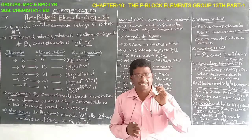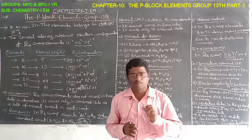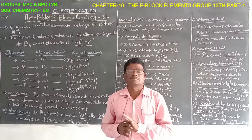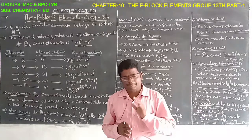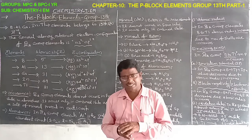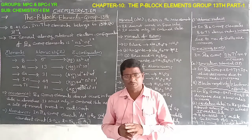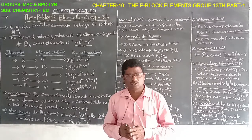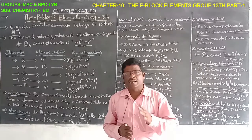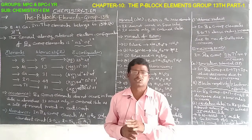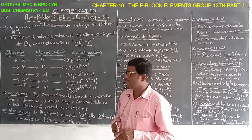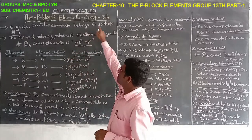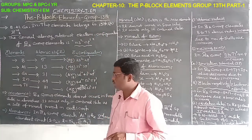The P-Block elements span from Group 3 to Group 7 and Group 0 elements. These include the 3rd group, 4th group, 5th group, 6th group, 7th group, and Group 0 elements. The first P-Block group is the 13th group elements, also called 3rd A group elements.